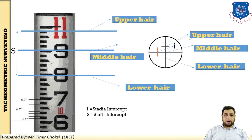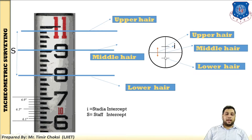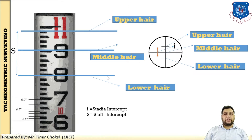The difference between upper hair and lower hair is called small 'i', which is the stadia intercept. Similarly, a ray against the upper crosshair on the staff gives the upper hair staff reading, a ray against the middle hair gives the middle hair reading, and a ray against the lower hair gives the lower hair reading. The difference between upper head reading minus lower head reading equals S, the staff intercept. So small 'i' is the stadia intercept and S is the staff intercept.